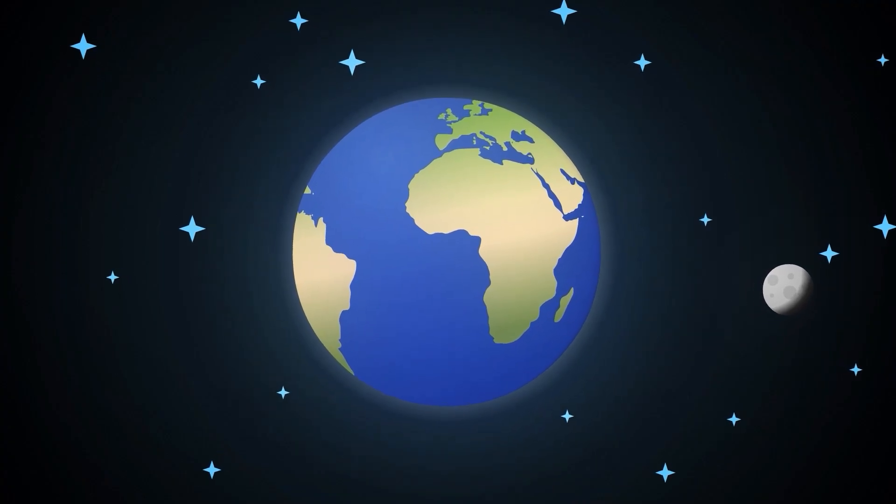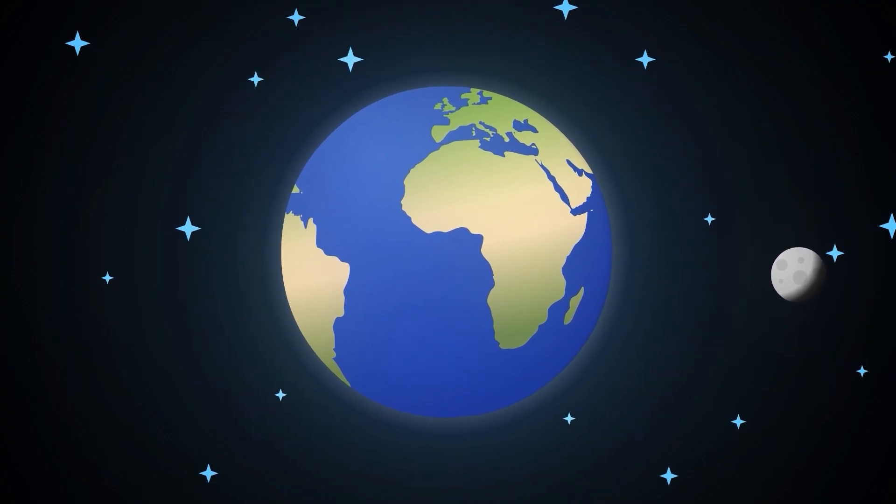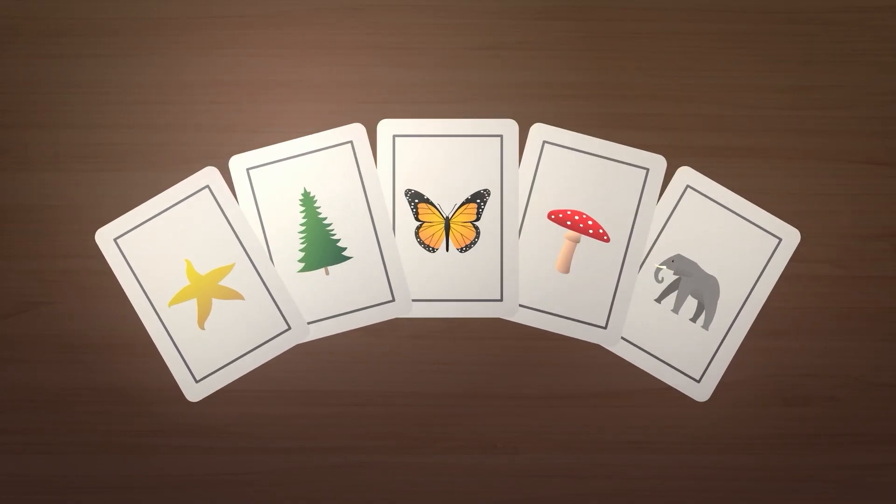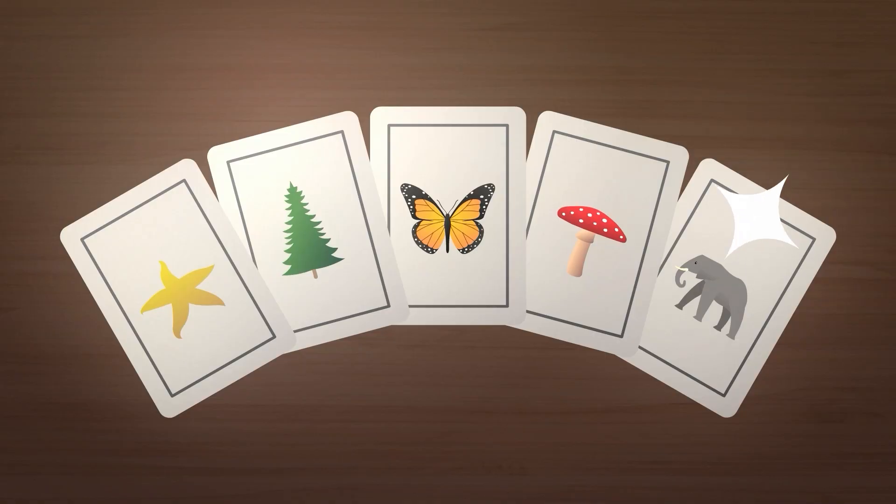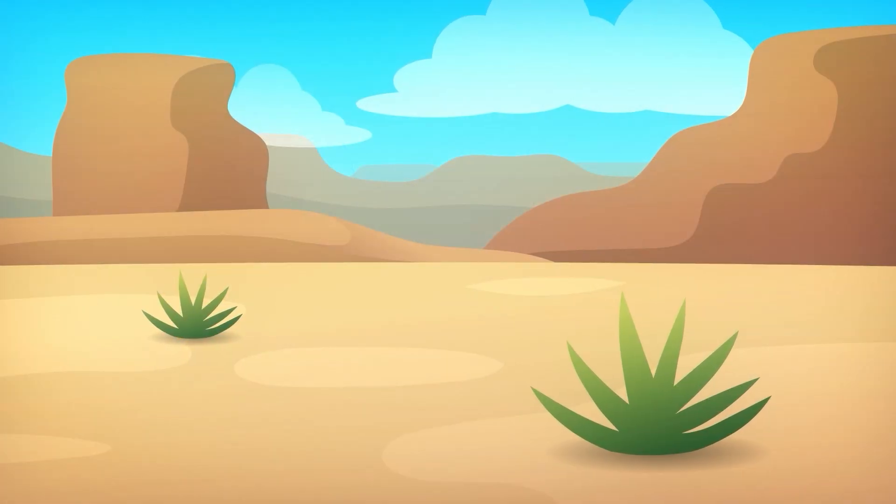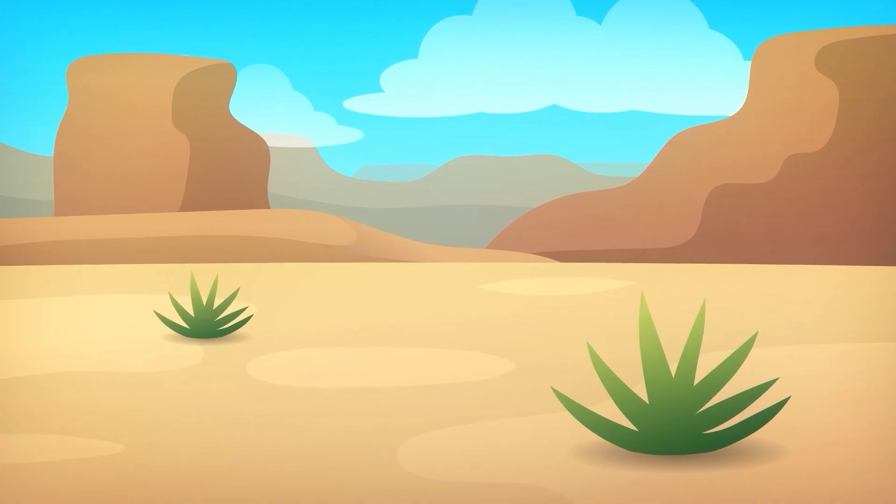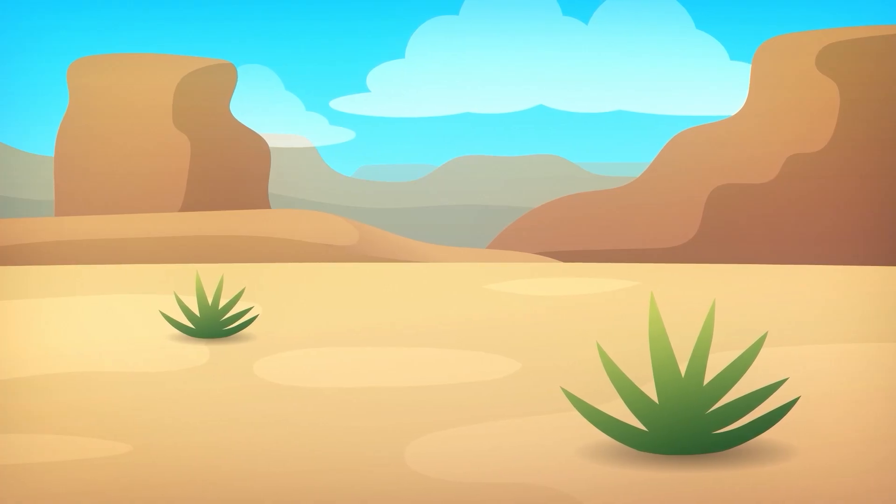People have always tended to think that living creatures are unchanging, that the species we see today have existed from the very beginning and were created perfect. During the 19th century, European researchers accumulated findings that refuted this narrative.